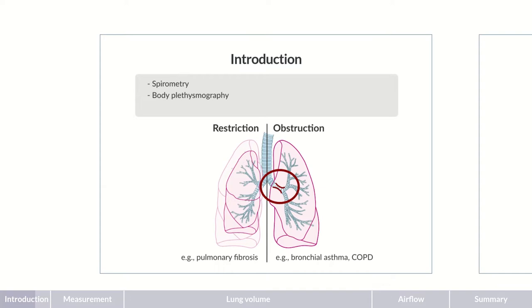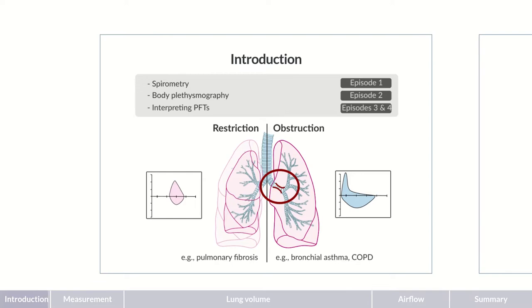So pulmonary function testing provides important results to identify ventilatory defects. In this Chalk Talk series on pulmonary function, we'll first start by explaining what spirometry is, followed by body plethysmography. Using this as a basis, we'll explain how to interpret pulmonary function test results to differentiate between restrictive and obstructive pulmonary diseases.